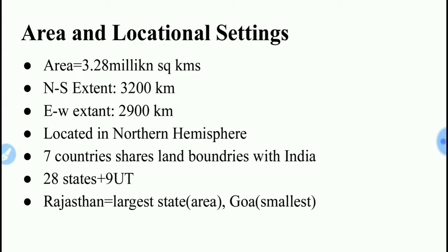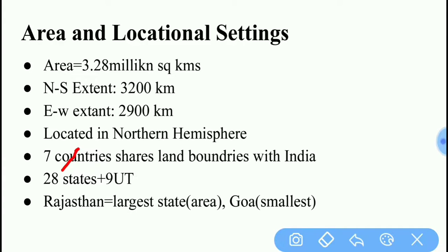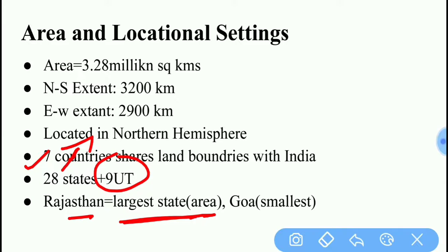When talking about the number of states: recently, Jammu and Kashmir was separated into two separate union territories. That's why India now has 28 states, while there are 9 union territories. Rajasthan has the largest area — it is the largest state in terms of area — while Goa is the smallest state.